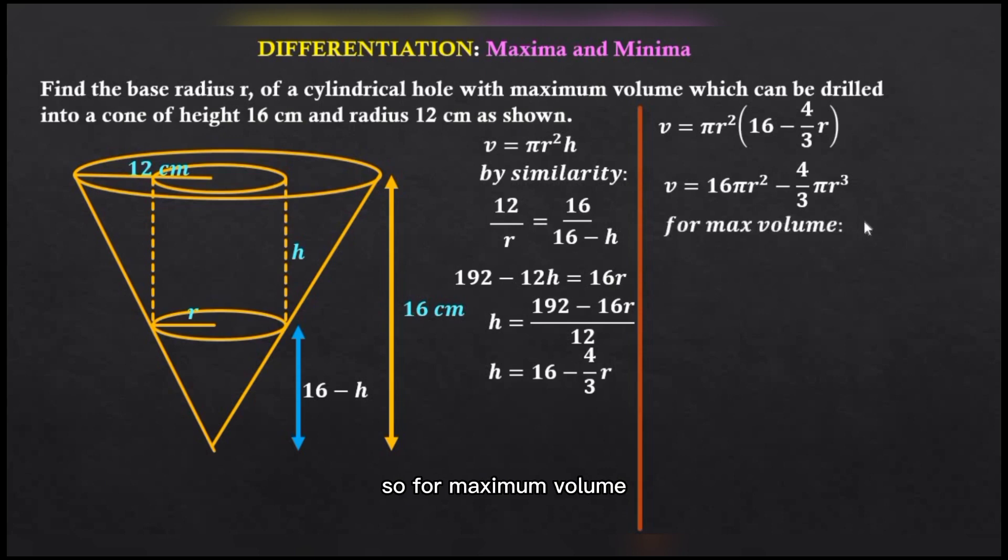So for maximum volume, the derivative of the volume v with respect to r, that is the base radius, should be equal to zero. That is dv/dr = 0.